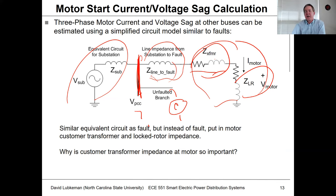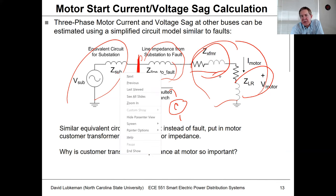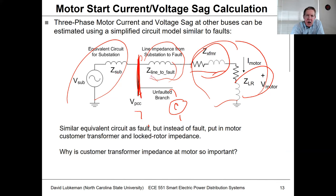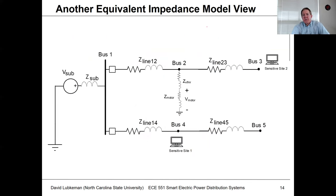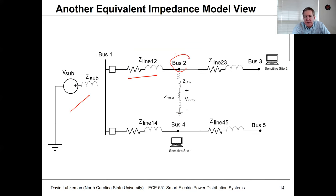In these calculations we're going to use per unit because we would have a transformation at the substation and at the customer, making it awkward to work through two transformations in volts and amps. In this equivalent view we have two parallel feeders: the substation, the line, bus 2 where the motor is starting, and we're interested in what degree a customer on the same feeder would be affected versus a customer on an adjacent feeder.